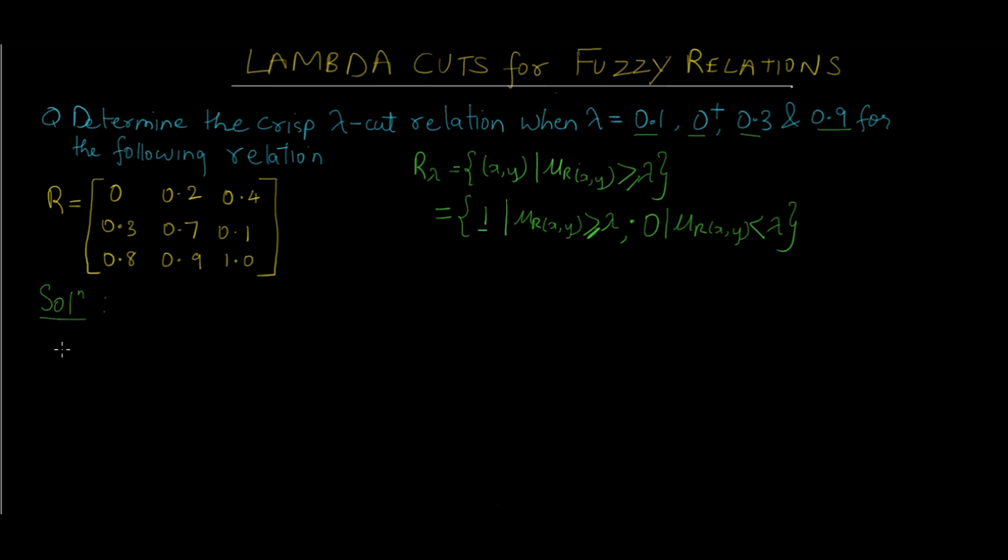Here's how you go about it. We write R₀.₁. We compare 0.1 with 0. We know 0 is less than 0.1, so we replace it with 0. Since it is already 0, we keep it as is. For the next value in the matrix, 0.2 is greater than 0.1, so we replace 0.2 with 1. Since this is a crisp set, it has only 0s and 1s. We are going through the process of defuzzification.